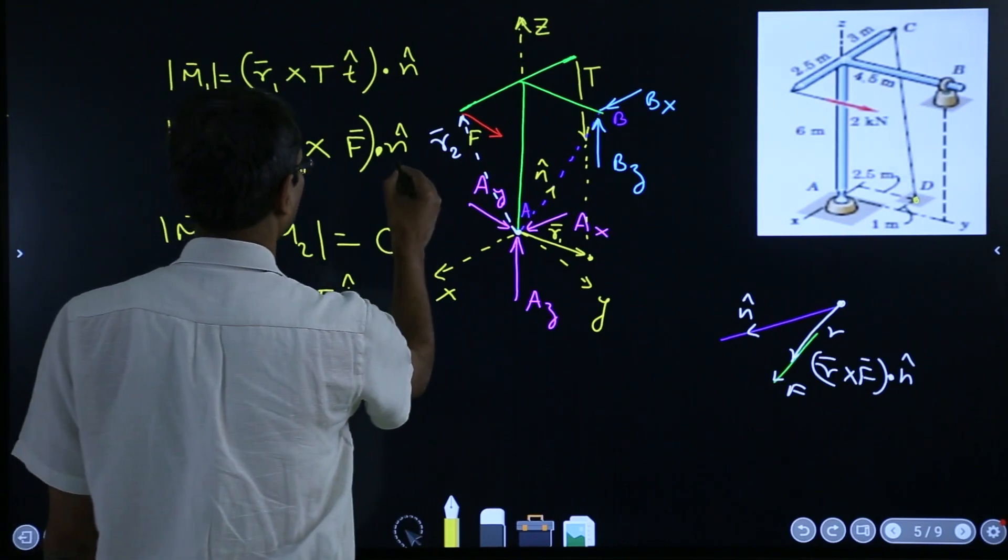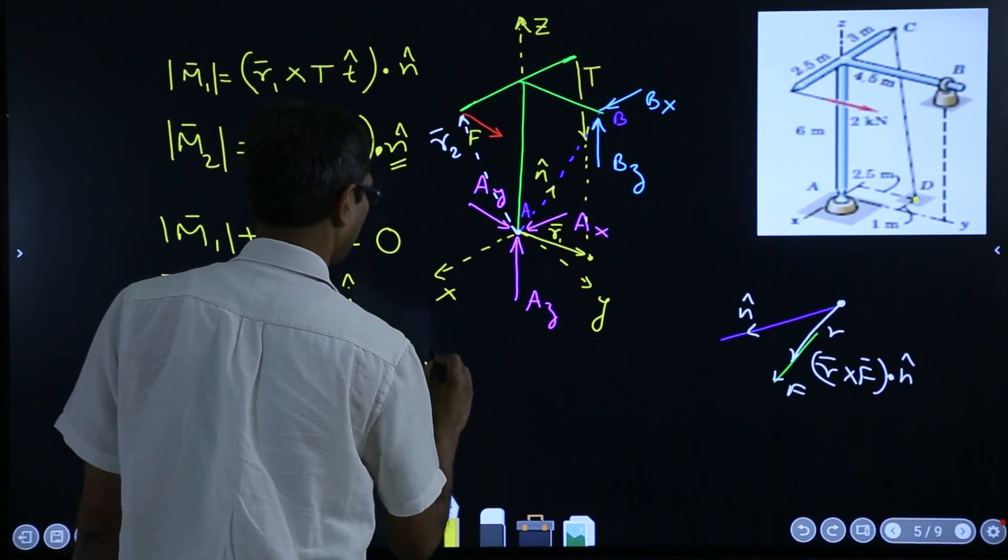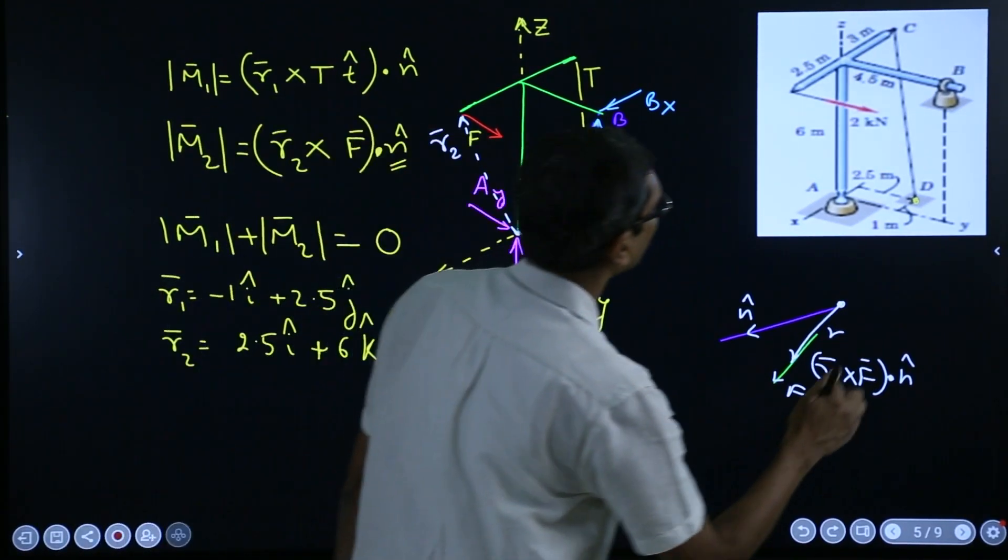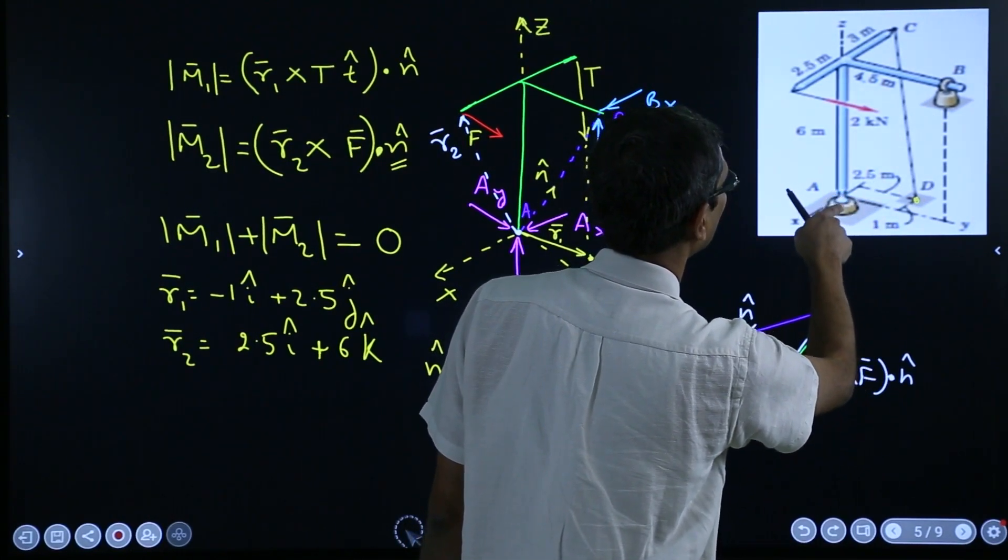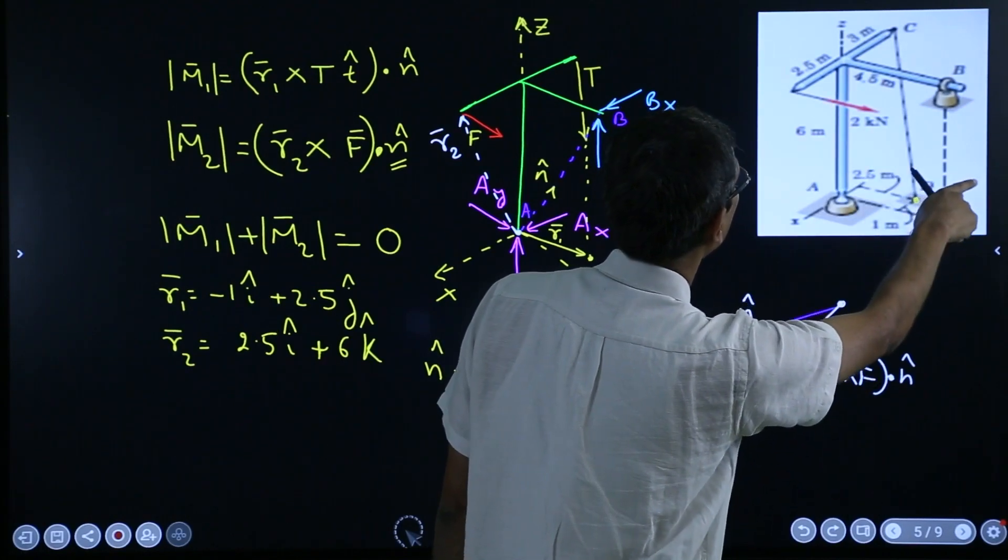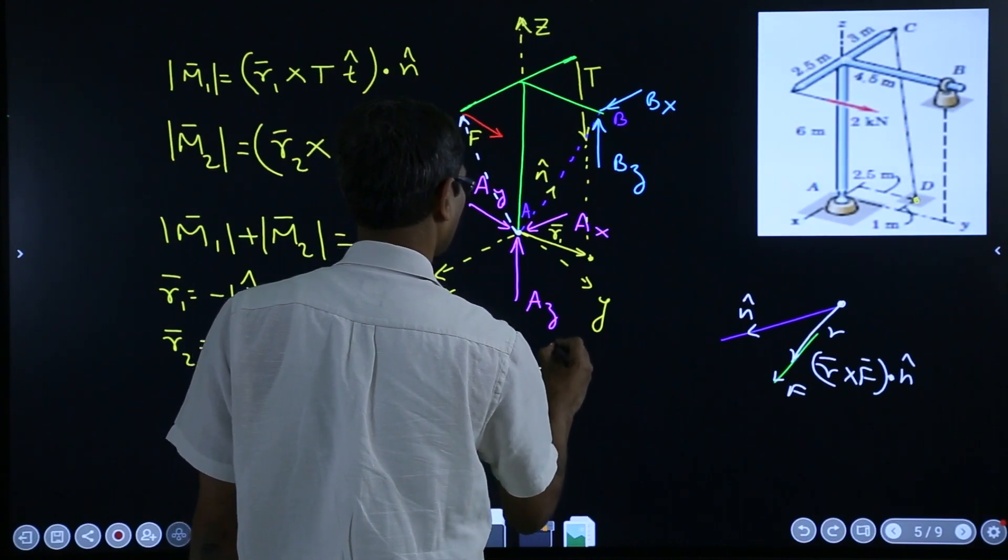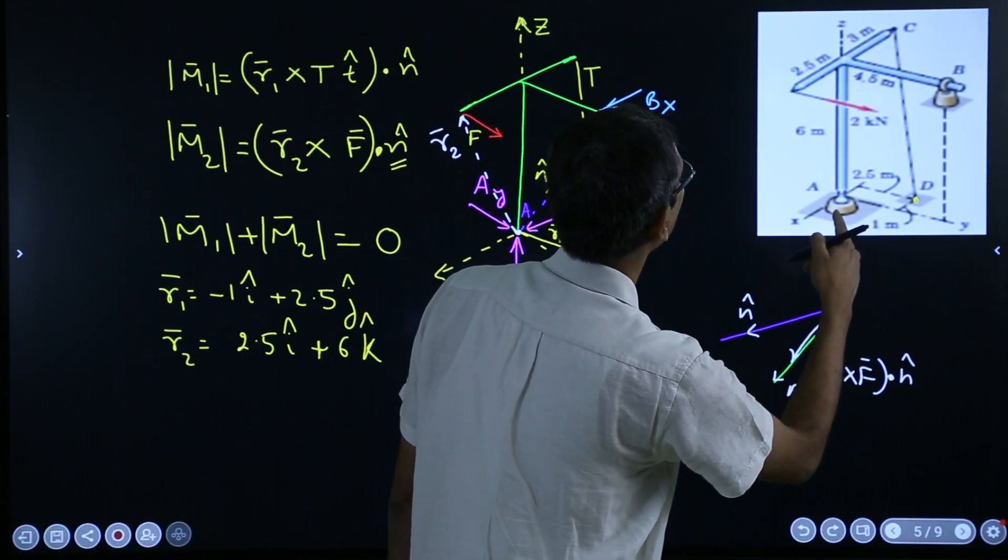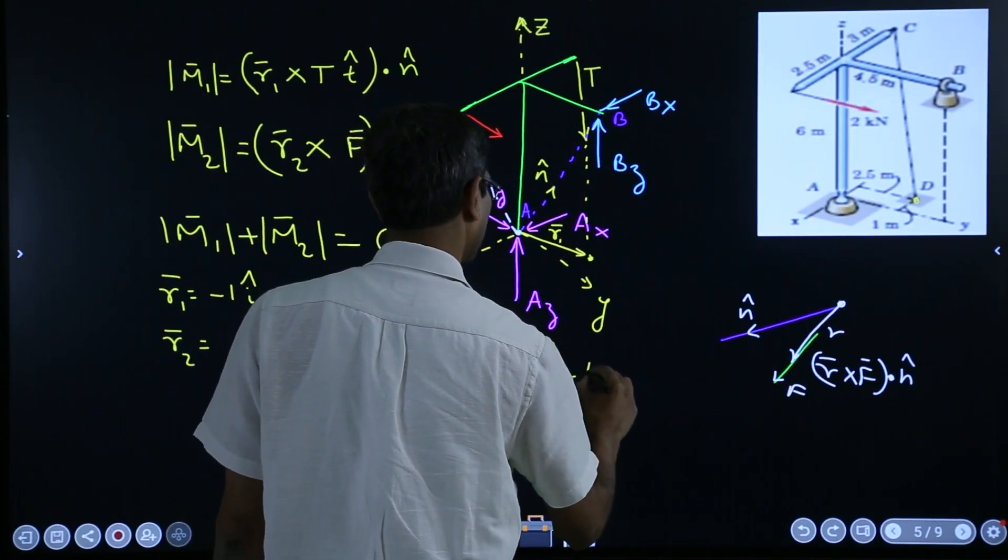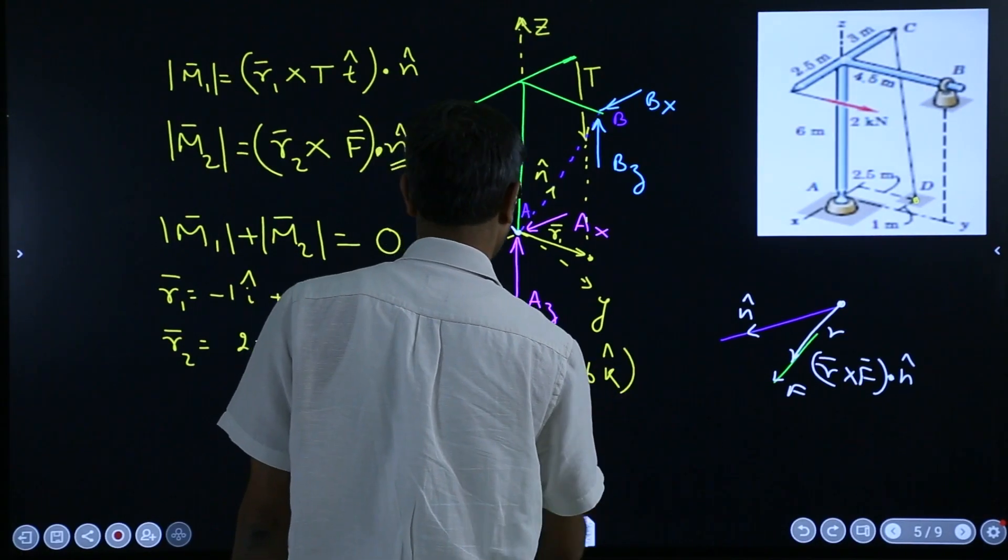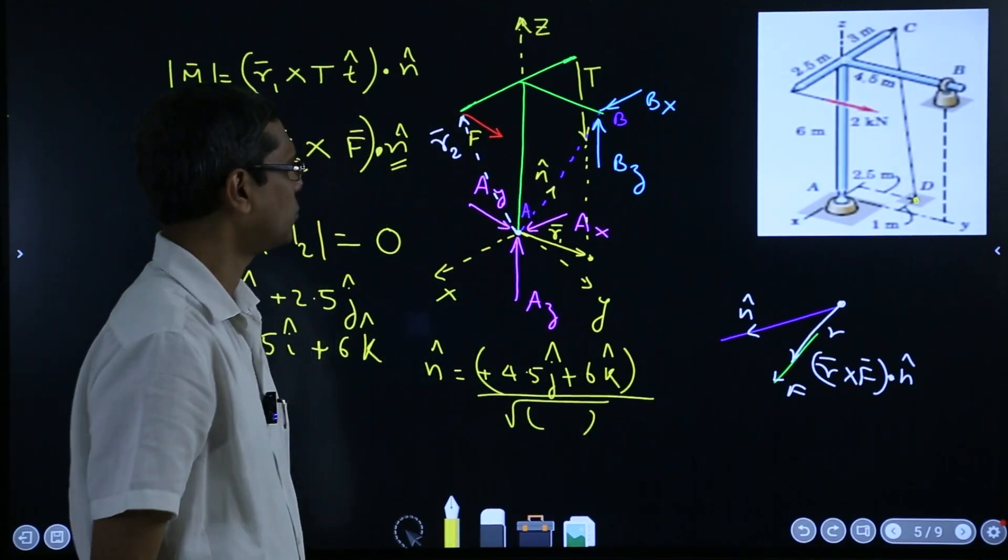And what is N cap? N cap, you can find that out. N cap is how much? You have to come to B. So to come to B you have to come 4.5 in Y. That means plus 4.5 J. Then X is 0. So plus 6k. So this divide by its magnitude. If you do that you will get N.